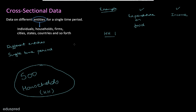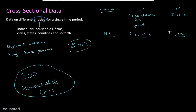In this example, let's say we are interested in the relationship between expenditure on food and income in the year 2019. So we are going to ask the households to provide information related to the year 2019. When I go to household number one, I will ask what was their expenditure on food in 2019 and what was their income in 2019. I'm writing this as C1,2019 — consumption of household one in the year 2019 — and I1,2019 — income of household one in the year 2019.